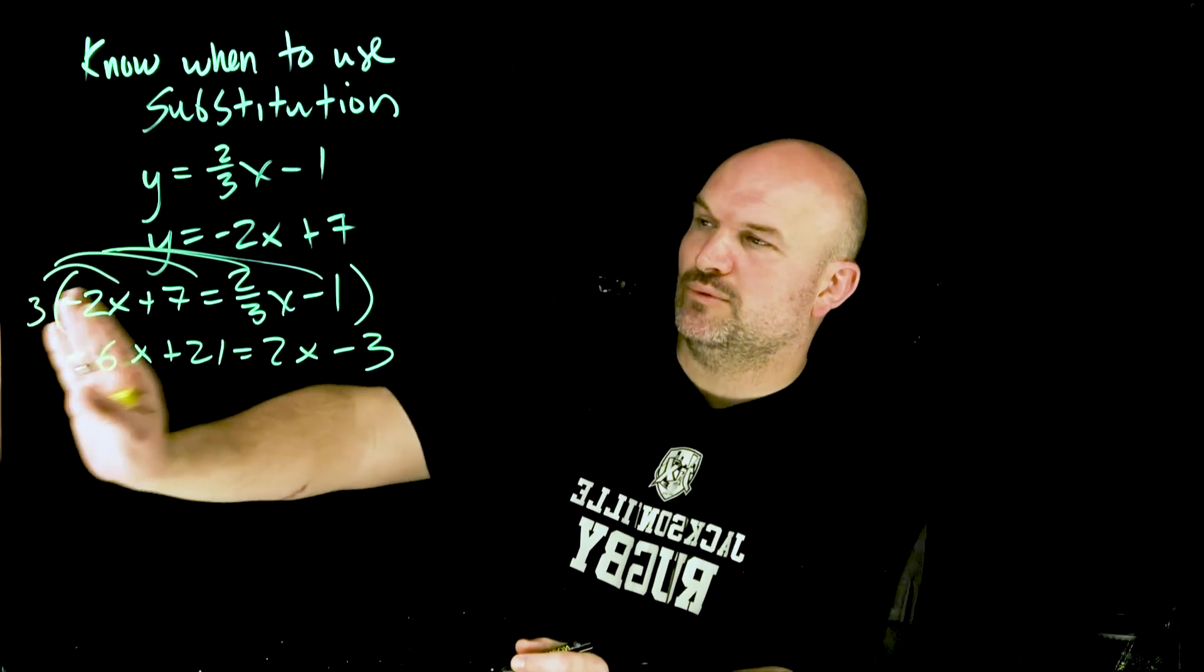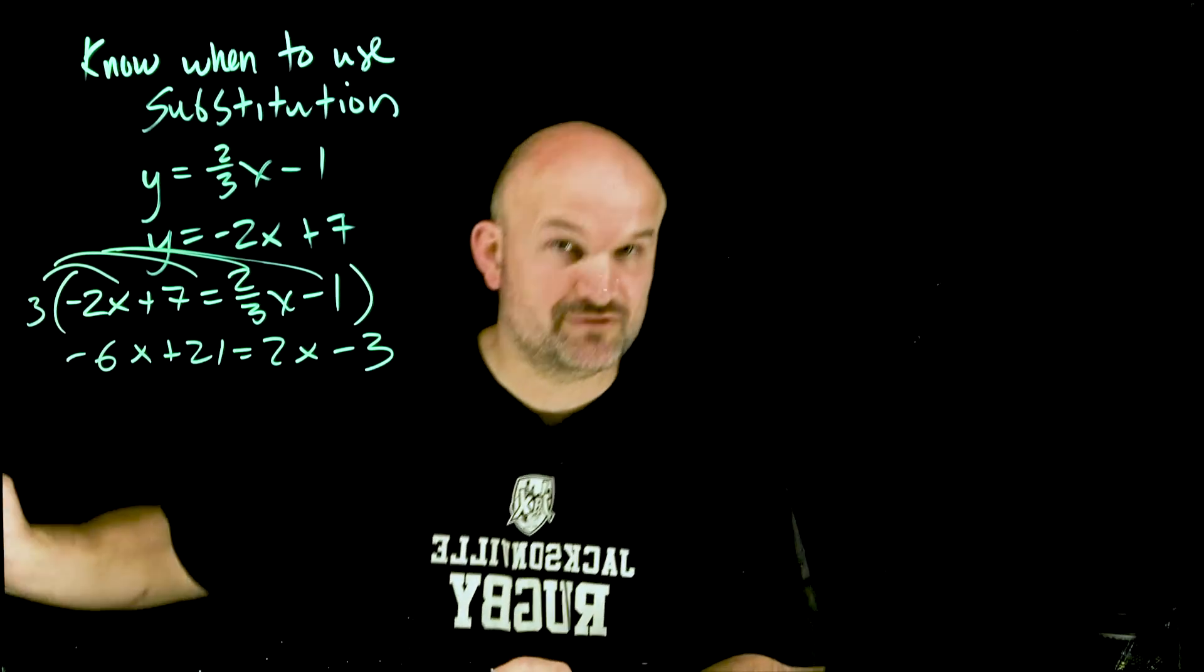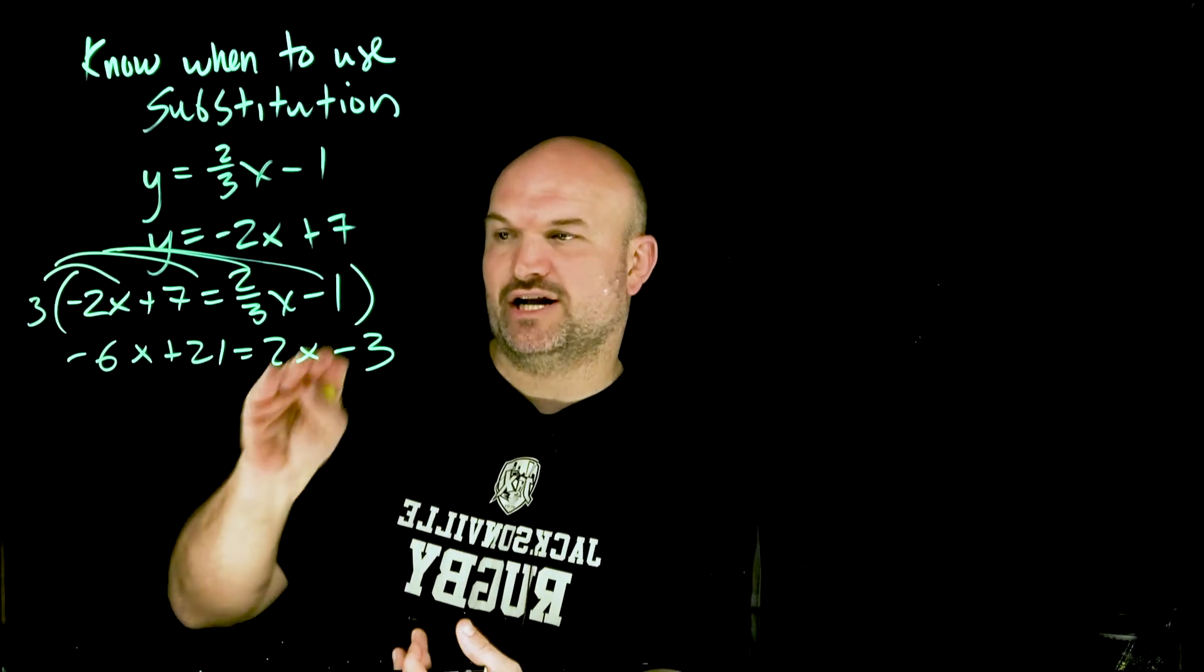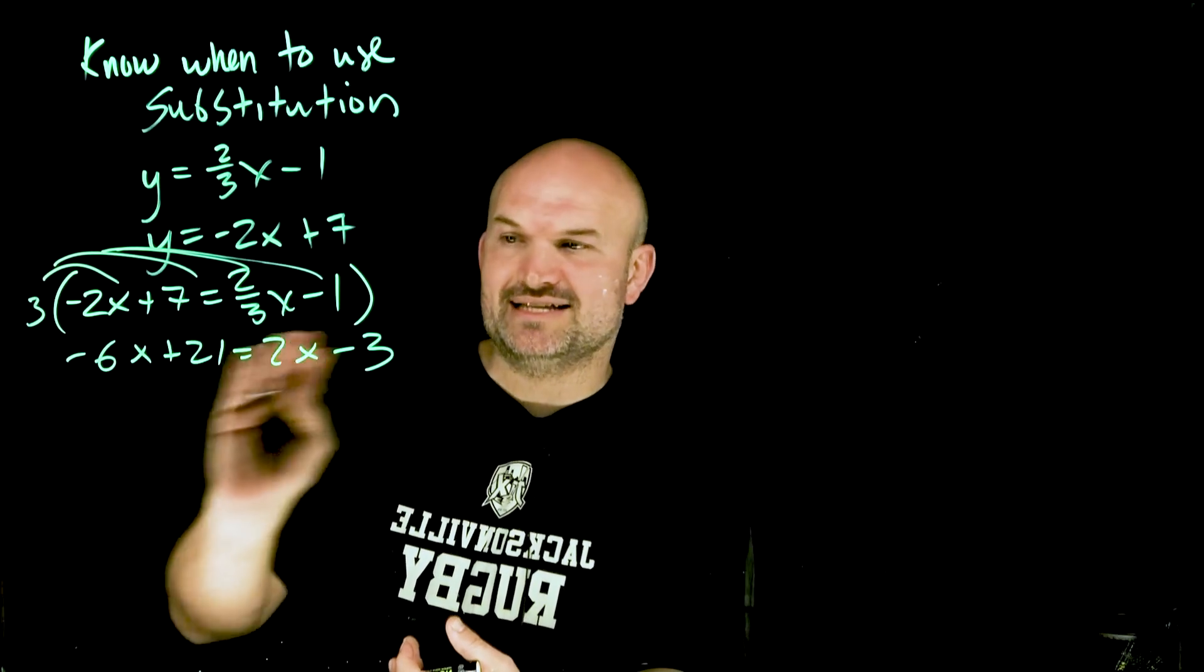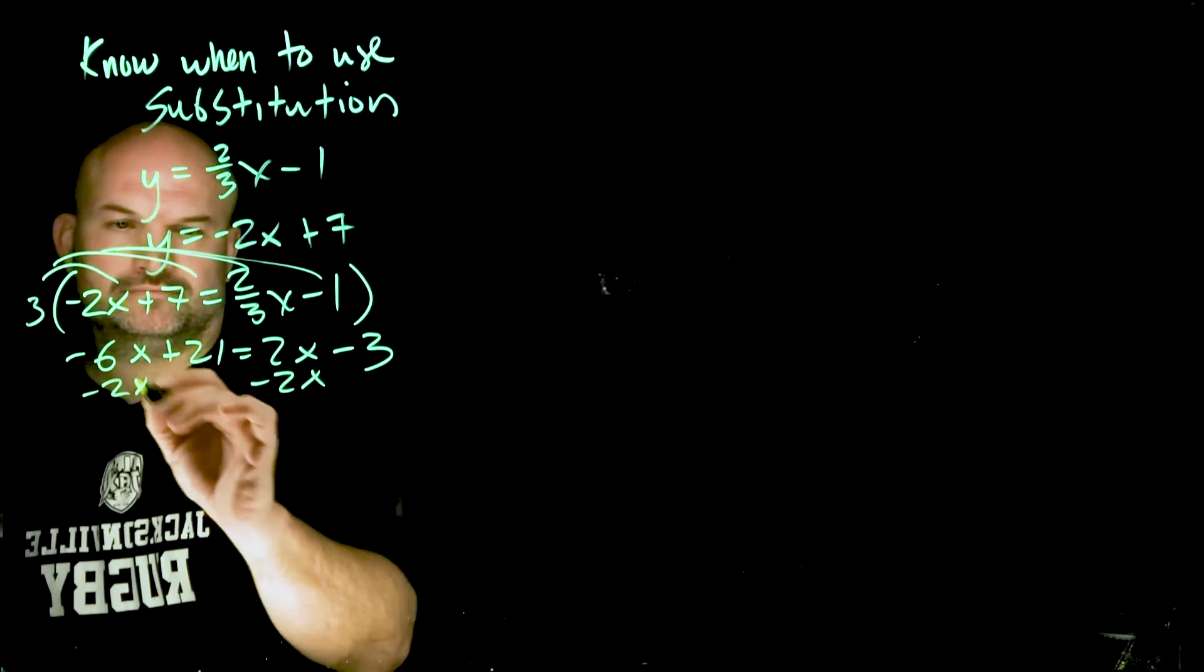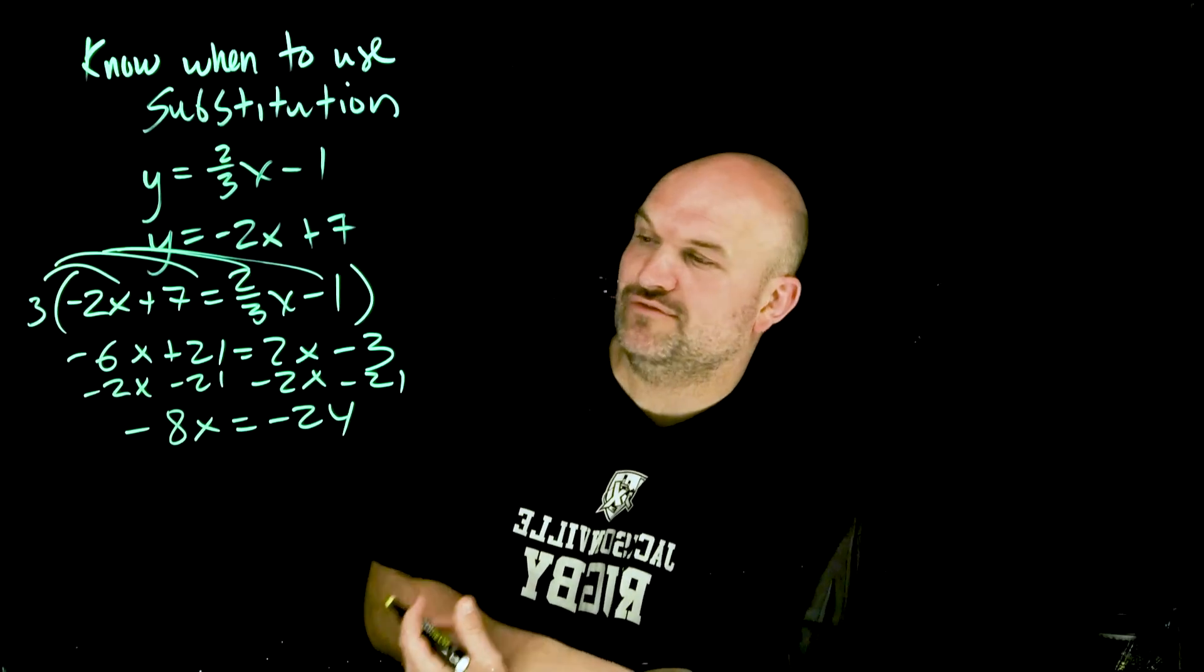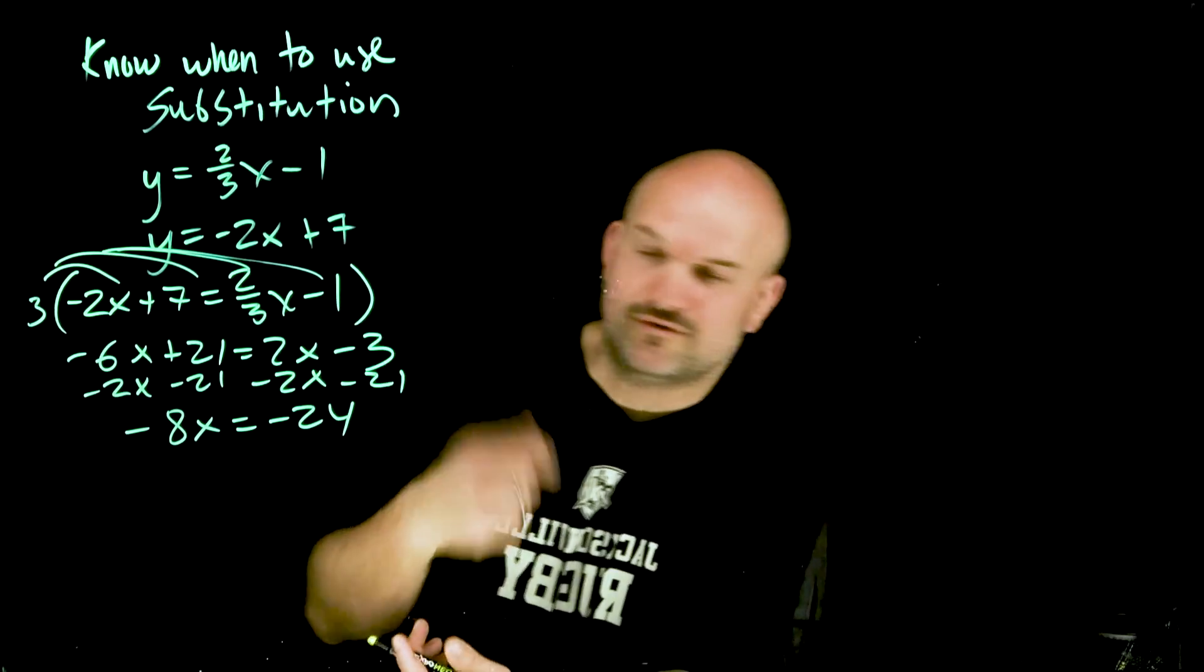Okay just really important remember when you're multiplying by a scalar to multiply everything. That is going to keep that equation equal. Now all we simply need to do is get our variables to the same side and get our constant over to the other side. And now you can see I have -8x = -24 so divide by -8 and I can solve for x.